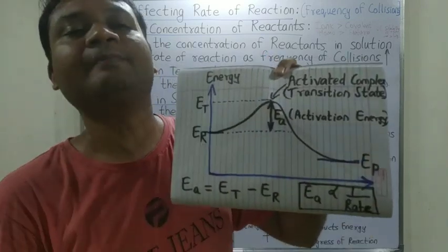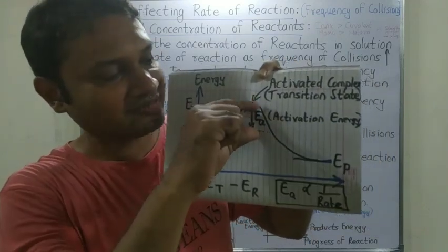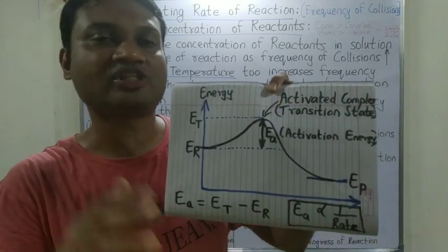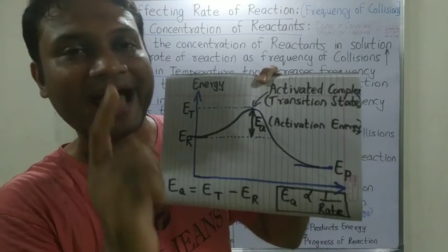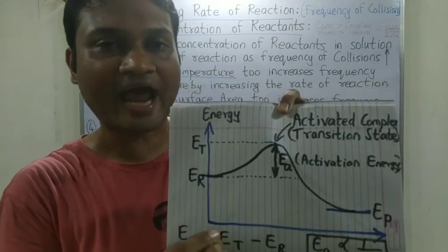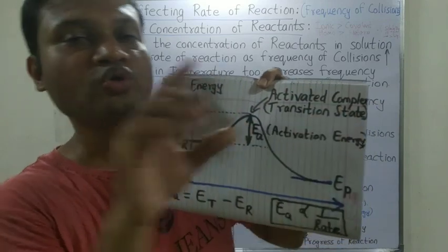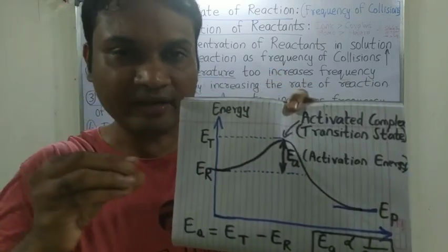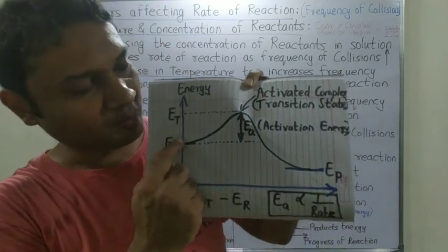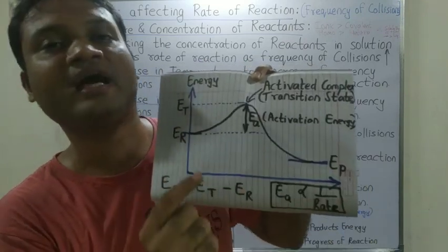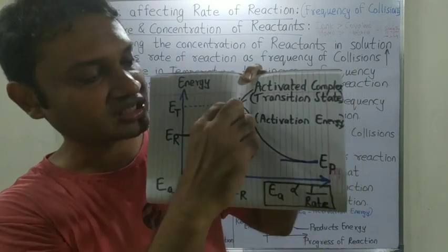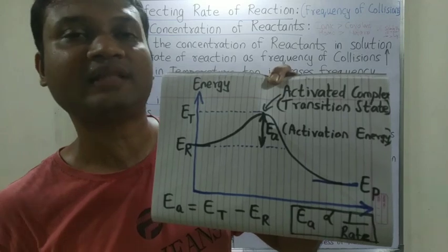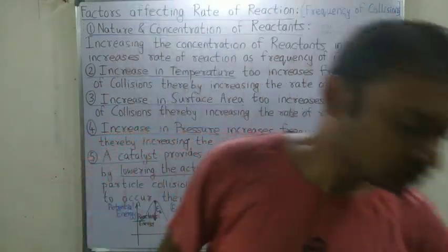If we somehow make the mountain smaller — that is, reduce the activation energy — we reach point B faster. When we use a catalyst, the activation energy decreases. The catalyst provides an alternative path where the activated complex requires less energy. Think of it as building a tunnel through the mountain — one person climbs over the mountain while another goes through the tunnel and reaches the destination faster. The one using the tunnel, like a catalyst, reaches the product faster because the activation energy is lower.